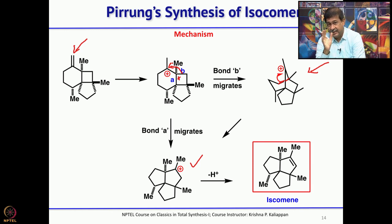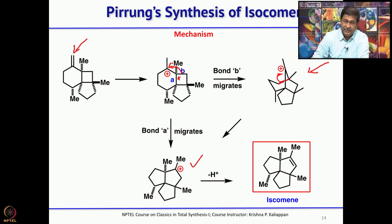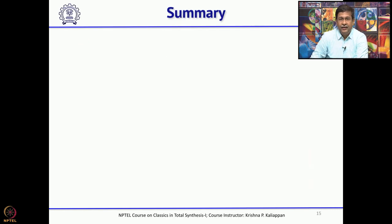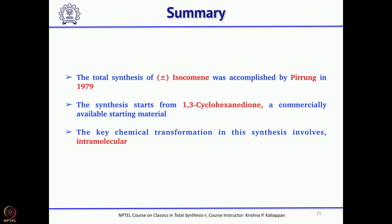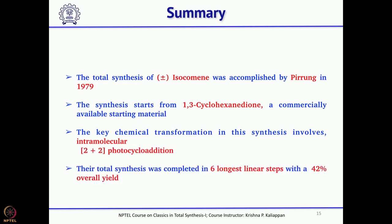This is one of the real classical total syntheses — a single-author paper by Michael Piran on the total synthesis of isocomane, reported in 1979. Starting with commercially available 2-methylcyclohexane-1,3-dione, the key reactions are 2+2 photocycloaddition and Wagner-Meerwein rearrangement. Overall the synthesis involved 6 longest linear steps and a yield of 42%, which is quite high for an angular triquinine.